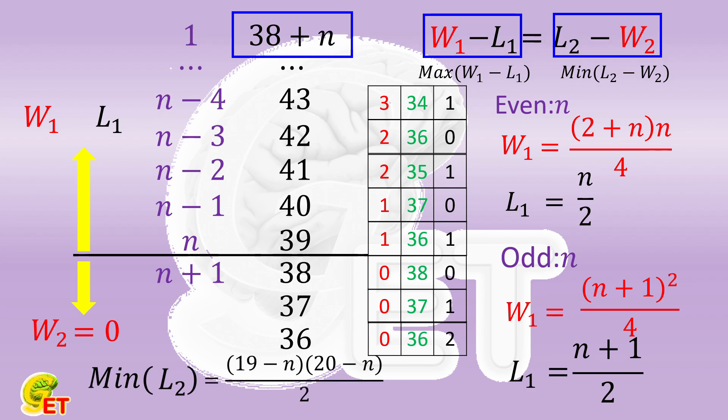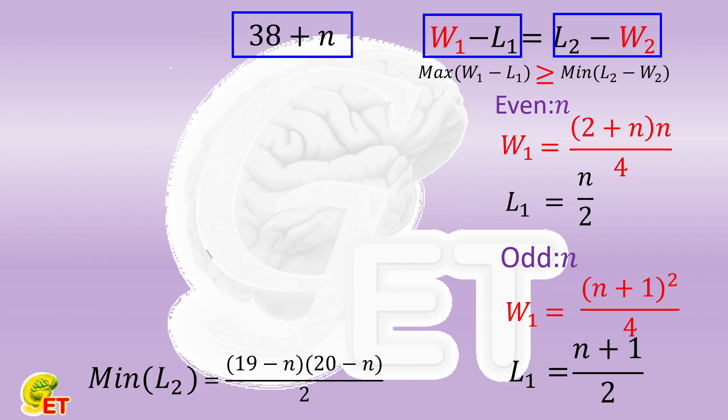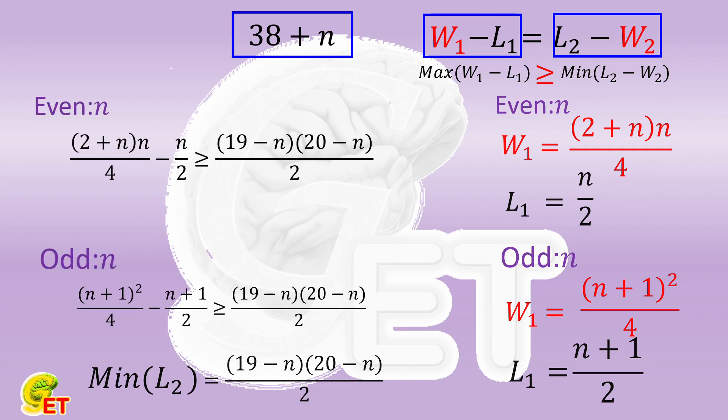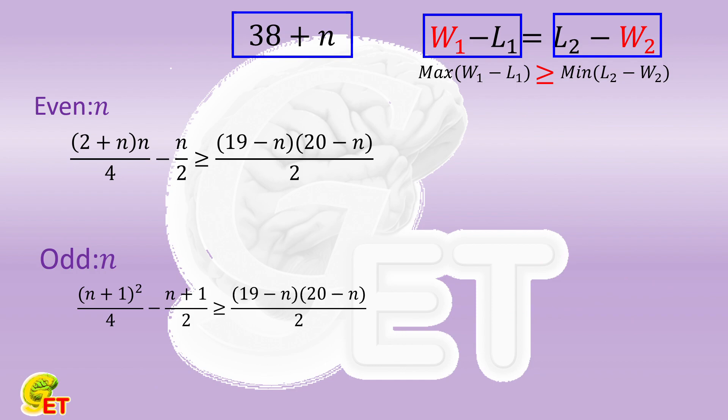Because W1 minus L1 is equal to L2 minus W2, the maximum value of W1 minus L1 cannot be smaller than the minimum value of L2 minus W2. For each case, where n is even or odd, we always have a quadratic inequality in one variable. Here we skip the specific process of solving them.